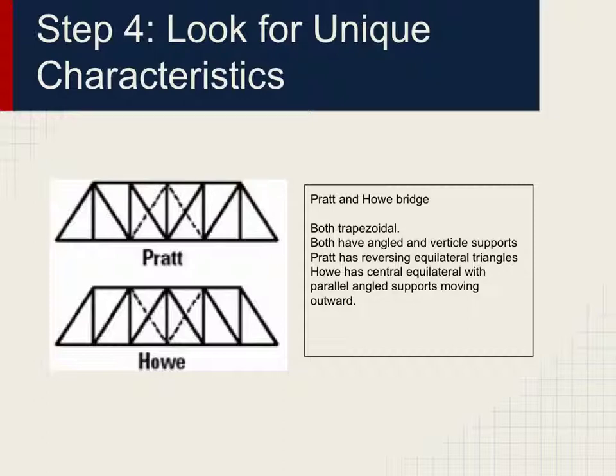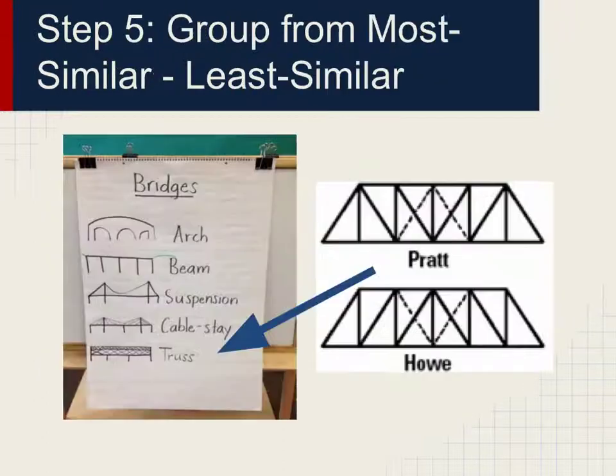Here's an example of two different bridges that are very similar but have some unique characteristics. Then you need to start classifying different organisms or different structures into their categories. For instance, the Pratt and the Howe bridge will fit under the truss category.